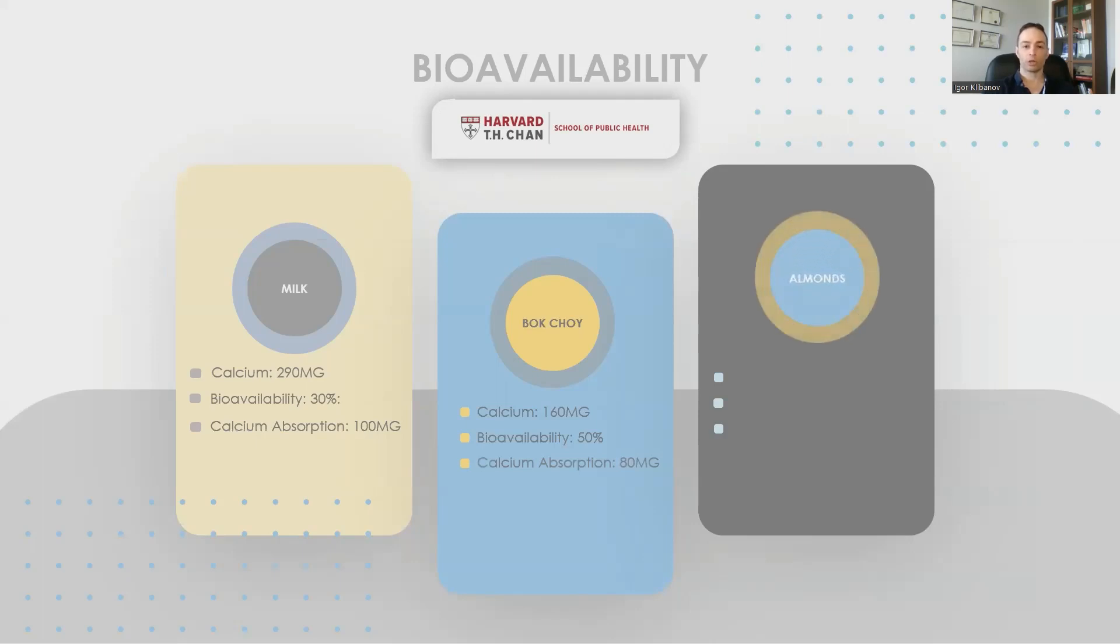And here's another example: almonds. Another source often claimed to be high in calcium. It isn't. First of all, the calcium source is decent, 251 milligrams. However, it has a pretty low bioavailability of only 20%. Therefore, the net calcium absorption by the body is 50 milligrams. And the vast majority of vegetables have pretty low bioavailability. Spinach, for instance, is only 5%. Broccoli is pretty low as well.